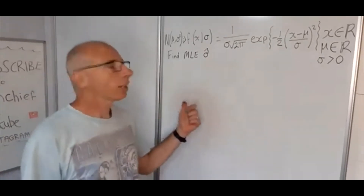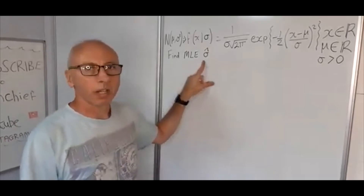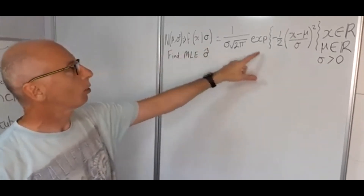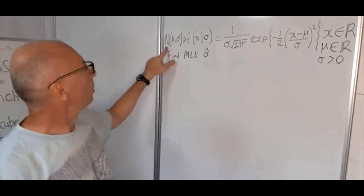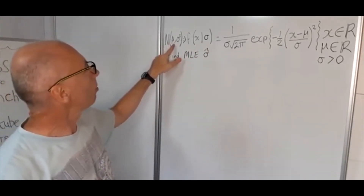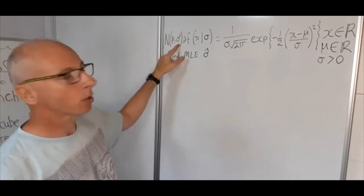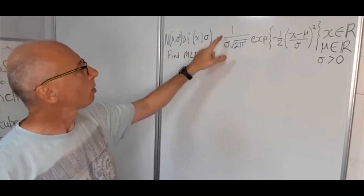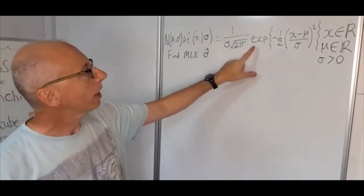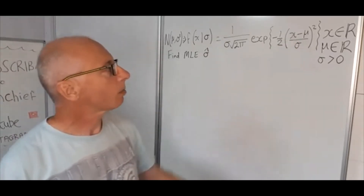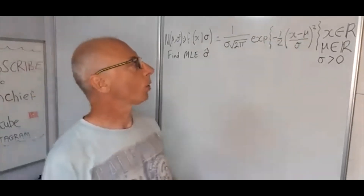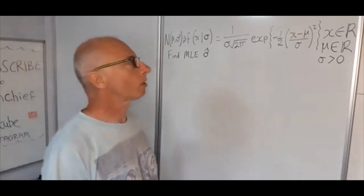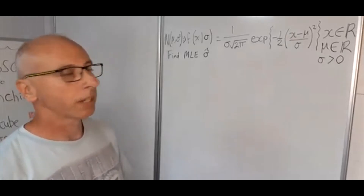We've got a statistics question here. We need to find the maximum likelihood estimate of sigma. Sigma is part of this normal distribution, where N is the normal distribution with parameters mu, which is the mean, and the variance sigma squared. The PDF is given as f of x given sigma equals 1 over sigma times square root of 2 pi, exponential of minus one half times x minus mu over sigma, all squared. X is in the reals, mu is in the reals, and sigma has to be greater than zero.